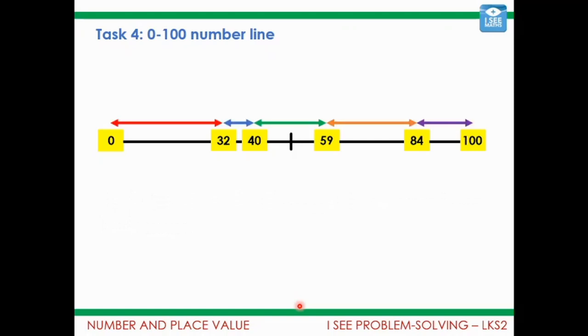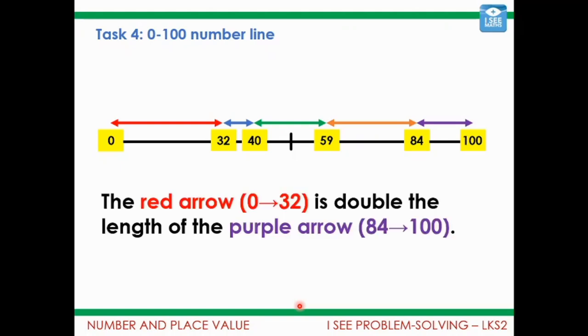And are those lengths about right in comparison with one another, those gaps. So the kind of things I might check: the red arrow or the difference between 0 and 32 is double the length of this gap 84 to 100 because this is 16 and that's 32. So actually this one should be double this one. So perhaps have a look at yours, are you still happy with where they're positioned or would you move them slightly?